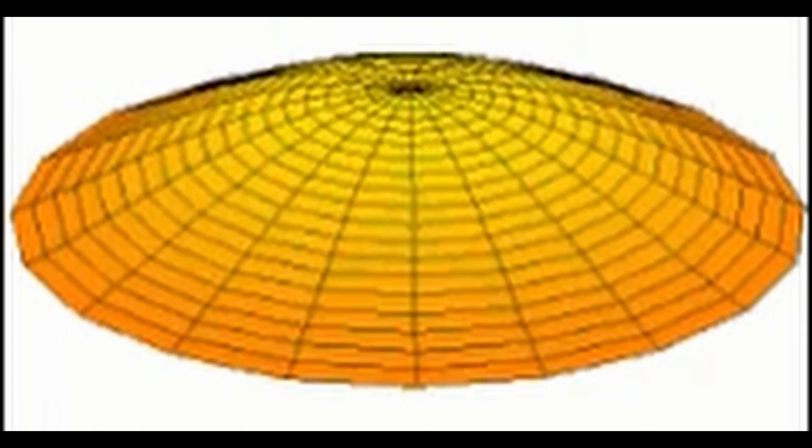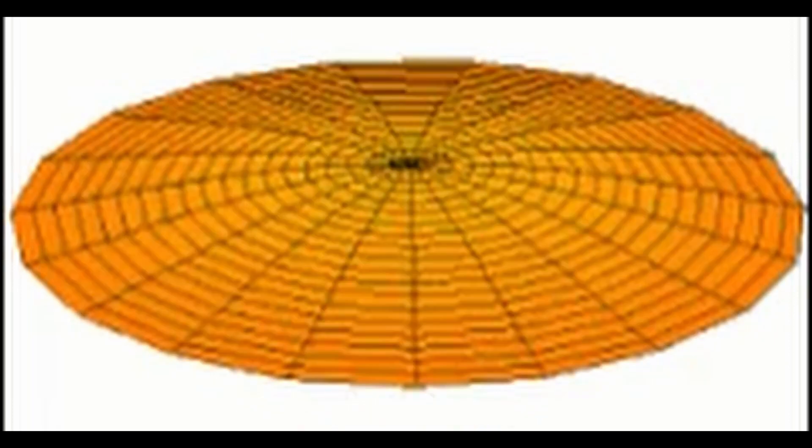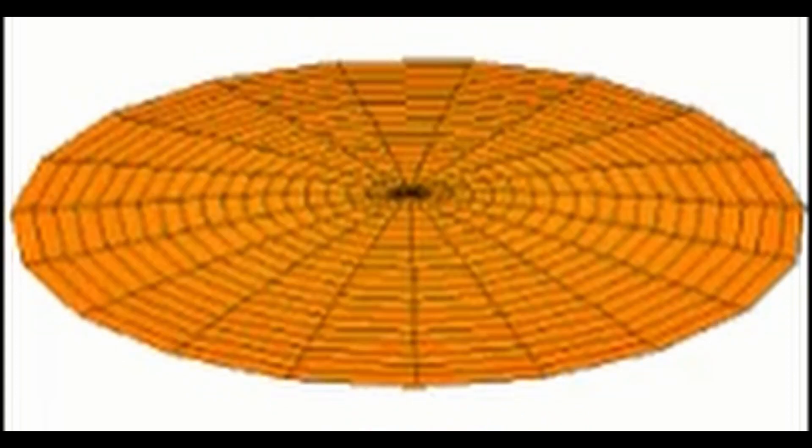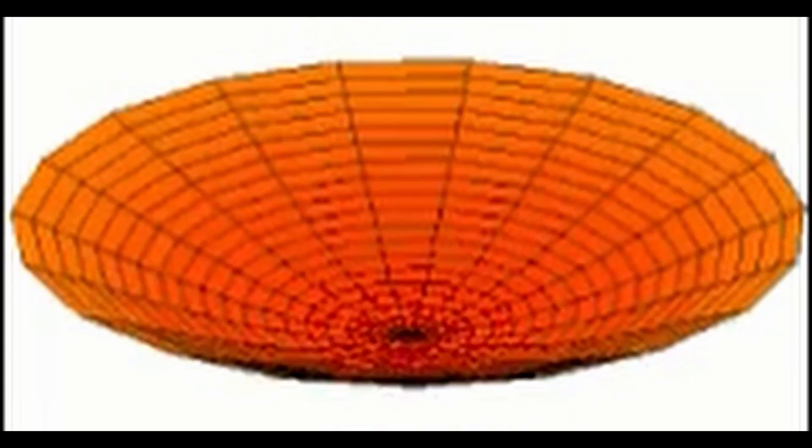Gravitational interaction: this is the force that governs the behavior of massive objects, such as planets and stars. It is responsible for the attraction between objects with mass and is described by Einstein's theory of general relativity. Unlike the other three fundamental interactions, the gravitational force is not yet fully integrated into the framework of particle physics, as it does not fit neatly into the standard model.